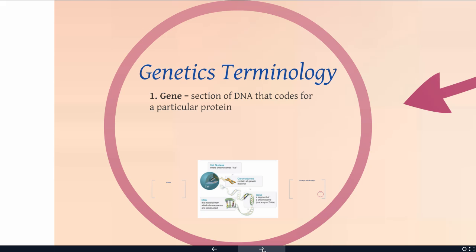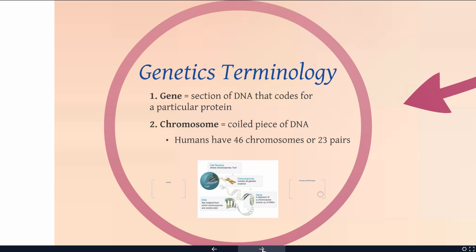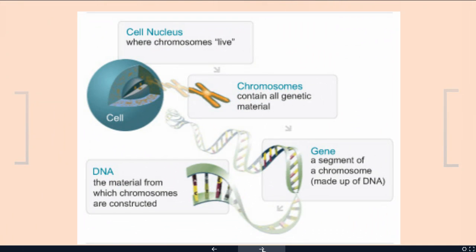A gene is a section of DNA that codes for a particular protein. A chromosome is a tightly coiled piece of DNA, and humans have 46 chromosomes, or 23 pairs — one from mom and one from dad. This picture illustrates the relationship of genes and chromosomes. You have your DNA, little sections of the DNA are individual genes, and when we take that DNA with many genes on it and tightly coil it up, we have a chromosome. Remember, those chromosomes are going to live in the nucleus of every cell in your body.